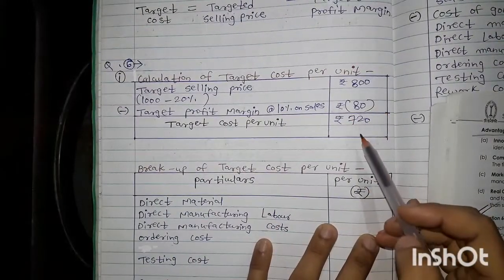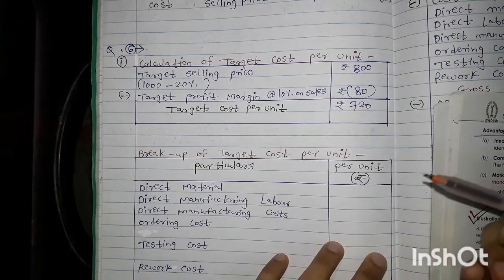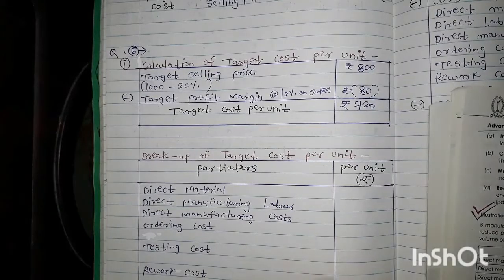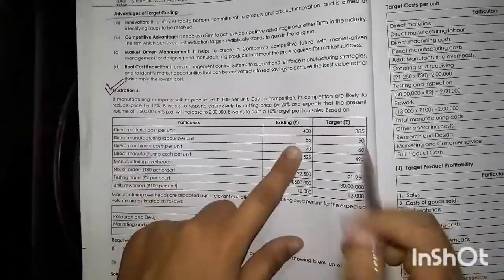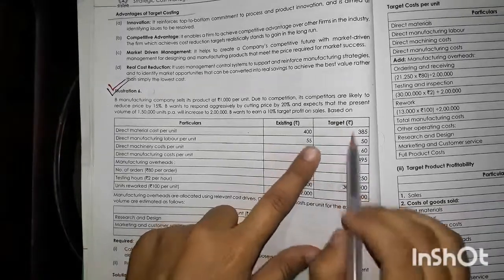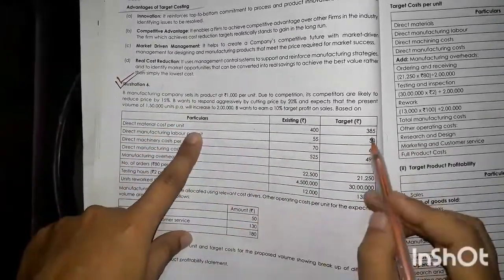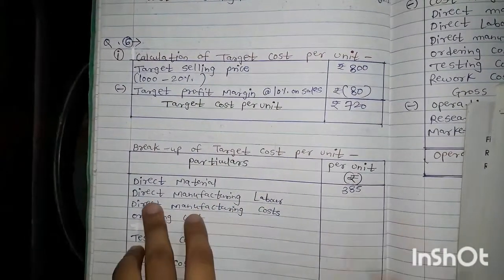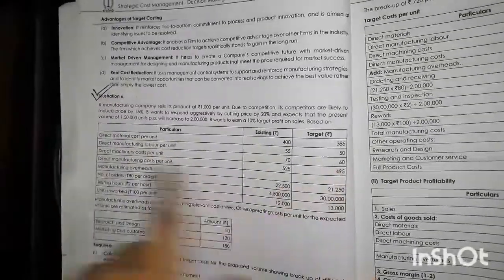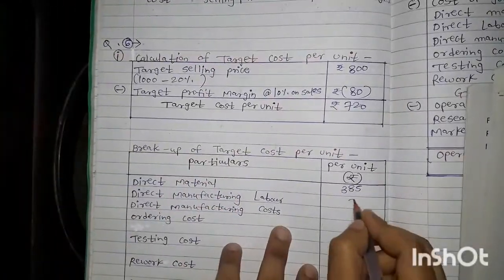Now we show the breakup of this target cost of Rs. 720 per unit. We focus on the target column, not the existing figures. Direct material cost per unit is Rs. 385. Direct manufacturing labor per unit is Rs. 50. Direct machinery cost per unit is Rs. 60. We ignore the sub-total shown in the question as we will compute our own total later.